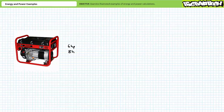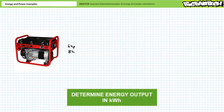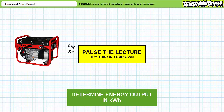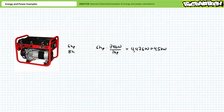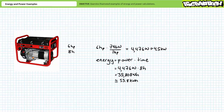Our next illustrated example features a 6 horsepower generator that runs 8 hours a day. See if you can determine the energy output of the generator in units of kilowatt hours. If you're tracking, you should have obtained the following results. We first need to convert power in units of horsepower to watts. If one horsepower is equivalent to 746 watts, six horsepower is equivalent to 4,476 watts, or roughly 4.5 kilowatts. Energy is power times time: roughly 4.5 kilowatts times eight hours yields roughly 35.8 kilowatt hours of energy.